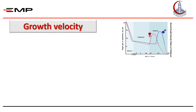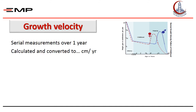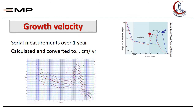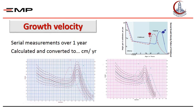Growth is not steady all the time — there are spurts and plateaus — and sometimes we need to have an idea about the overall growth of the child over a long period of time. To do so, we take serial measurements of the height over a year, add all the numbers together and convert it to centimeters per year, and plot the number on the growth velocity chart to determine if the growth velocity is within normal for age and sex or not.